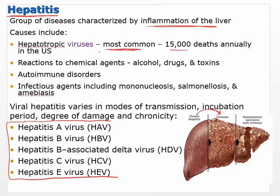We see about 15,000 deaths annually in the US from hepatitis. Infectious agents including mononucleosis, salmonella, and amoebas can all cause hepatitis — including bacteria. Anything that causes inflammation in the liver is classified as hepatitis. So we don't want to get too focused on the fact that most of the time hepatitis is caused by a virus, because hepatitis can be caused by other things as well. Viral hepatitis varies in modes of transmission, incubation period, degree of damage, and whether it's chronic or acute.